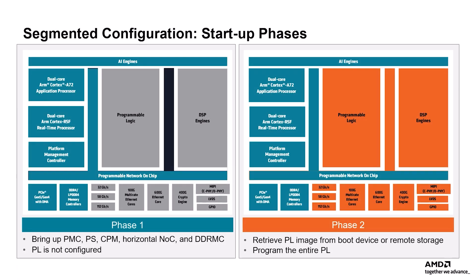The Segmented Configuration flow splits the entire booting process into two distinct phases. The initial PS boot PDI is generated such that everything except the PL design is configured in Phase 1. This PDI contains the entire PS, PMC, DDR, CPM, and related GTs, and the horizontal NOC information, which is mainly responsible for configuring the PS, DDR, and other essential components. The PL PDI is then delivered in Phase 2, in which the entire PL is configured, including the user design, the vertical NOC, transceivers and I/O, and other hardened blocks in the PL.